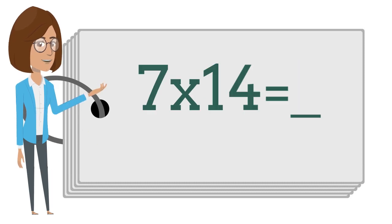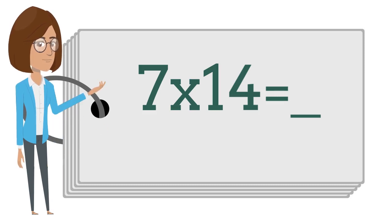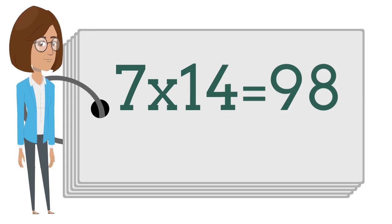7 times 14 is — say the answer out loud. 7 times 14 is 98.